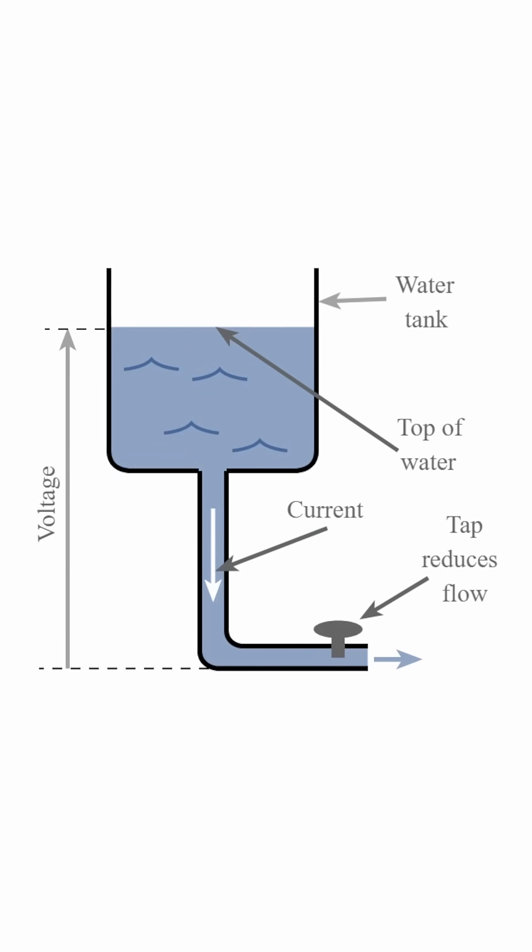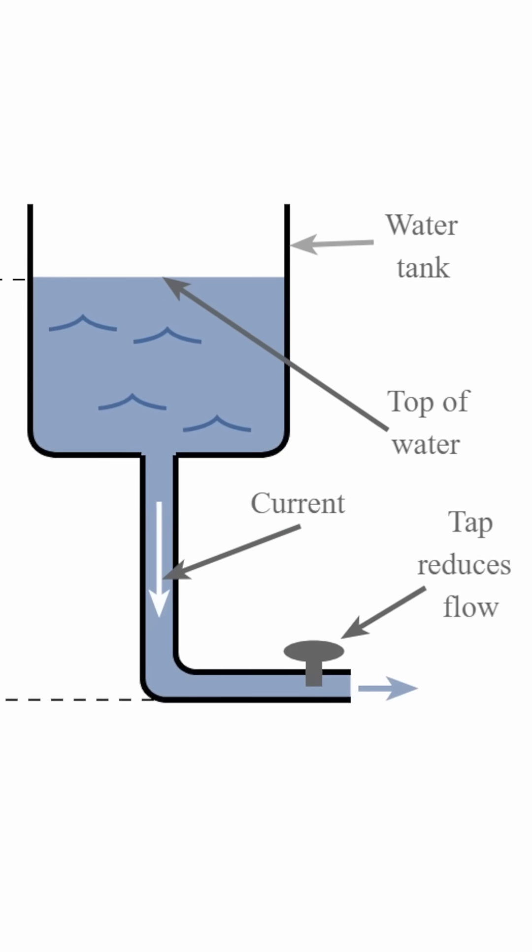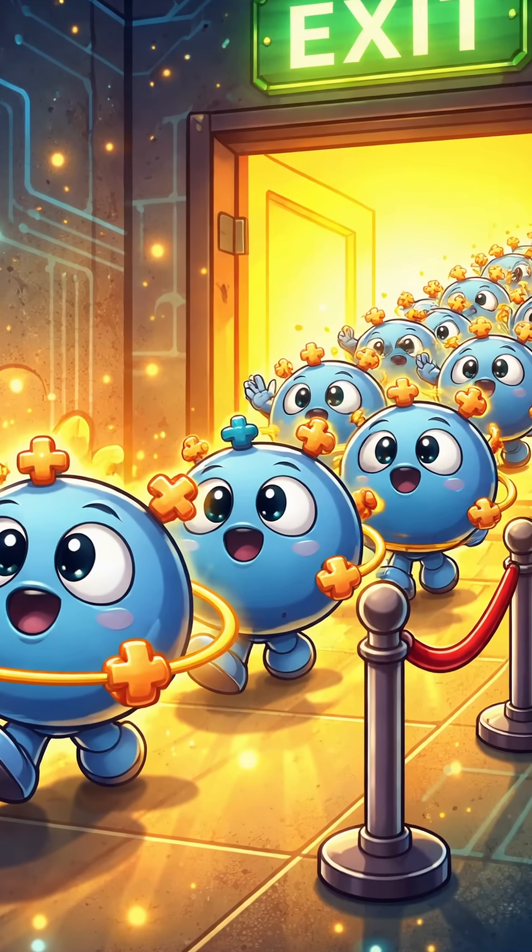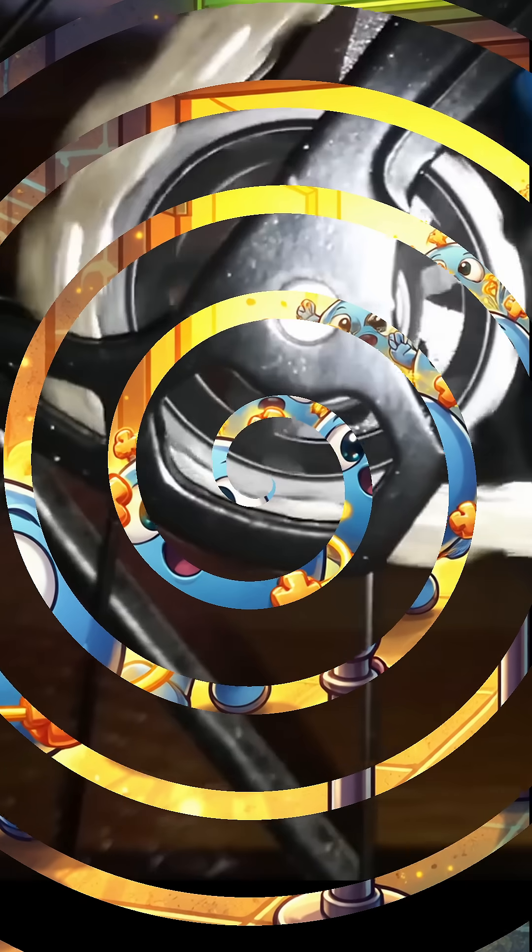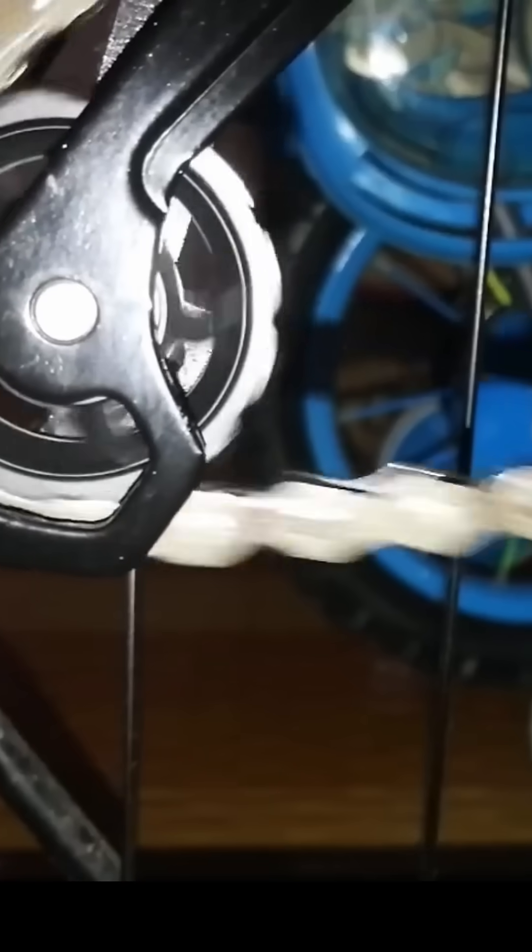A lot of people use a water tap as an analogy but that's not quite right. It makes it look like electrons back up and wait their turn. Electron movement is actually like a bike chain. If one part moves, the whole loop moves. There is no backing up.